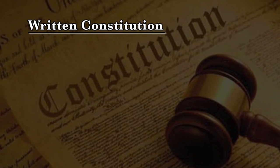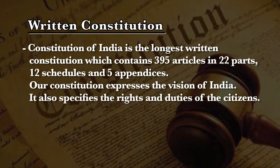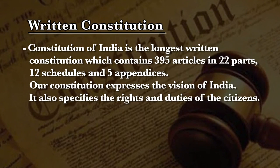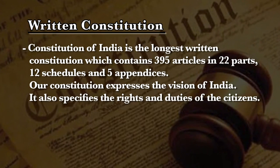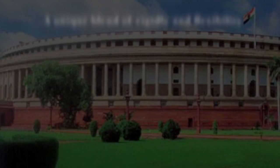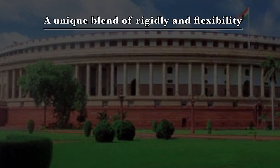After learning the constitutional values, let us identify the main features of our constitution. Our constitution is a very lengthy written document with many unique features. The first feature: our constitution is the longest written constitution, containing 395 articles in 22 parts, 12 schedules, and 5 appendices. It expresses the vision of India and specifies the rights and duties of citizens. Second feature: our constitution is a unique blend of rigidity and flexibility.